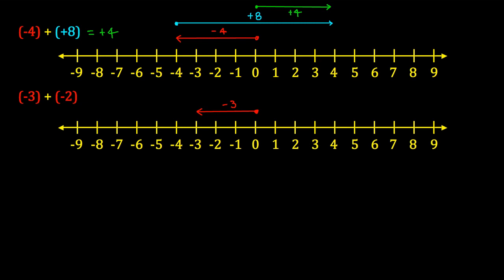Then immediately following that, I will draw a second arrow that extends another two units to the left. So one, two units, and that represents my negative two.